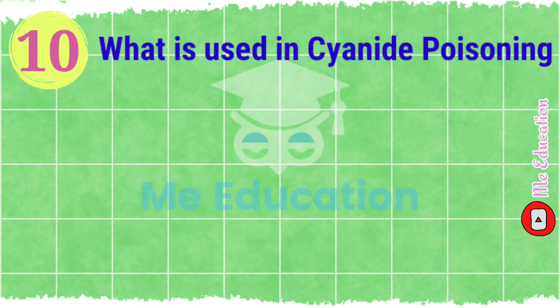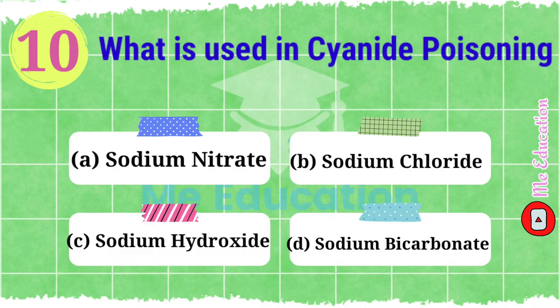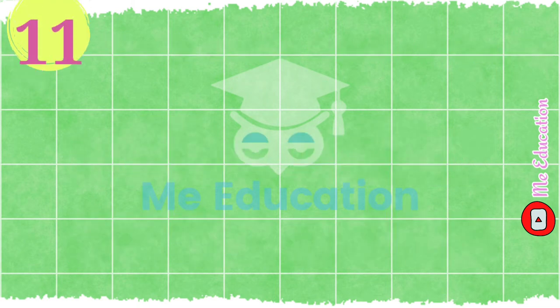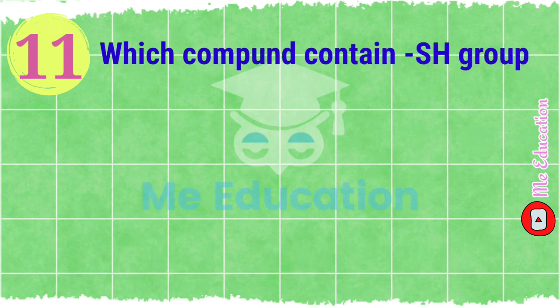Question number ten: what is used in cyanide poisoning? Options: A) sodium nitrate, B) sodium chloride, C) sodium hydroxide, D) sodium bicarbonate. The right answer is option A, sodium nitrate.